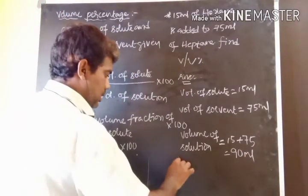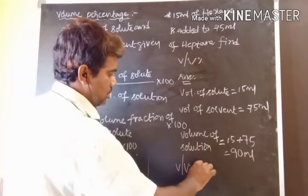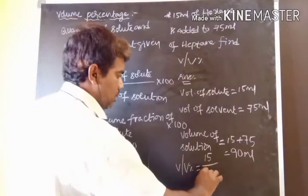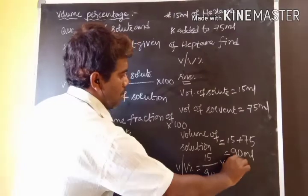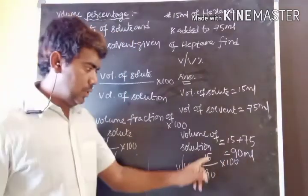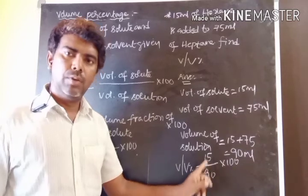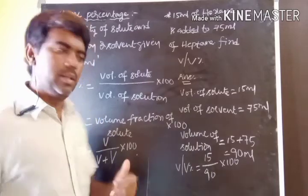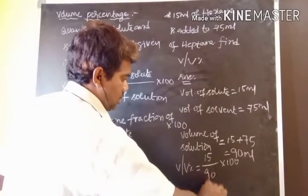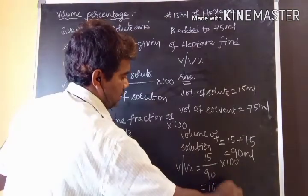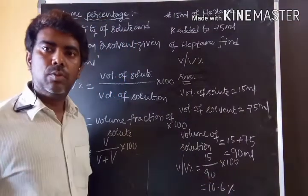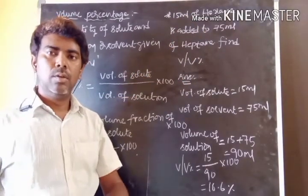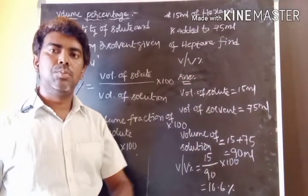Volume percentage = volume of solute / volume of solution × 100 = 15 / 90 × 100. This gives 1500 / 90, which equals approximately 16.66. So the volume percentage for 15 ml of hexane added to 75 ml of heptane is 16.6%.